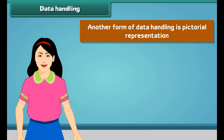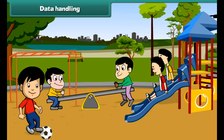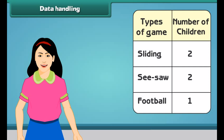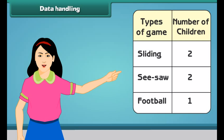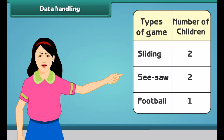Another form of data handling is pictorial representation. Let us learn about it. This is a garden with kids playing. Some of them are sliding, some of them are playing on a seesaw, while some of them are playing with a football. You can easily represent the number of children on slide, seesaw, and playing football by using tally marks. This picture is also represented by a following type of chart.